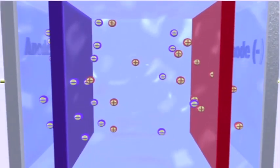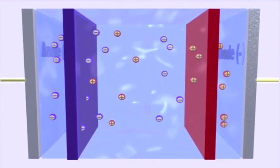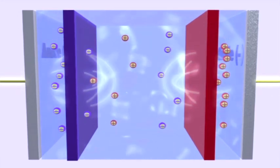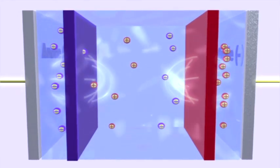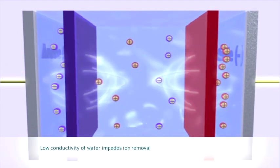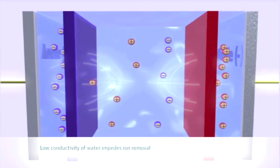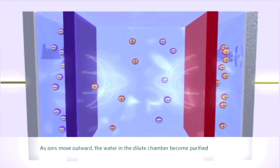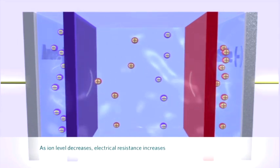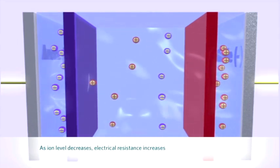This configuration of membranes and electrodes forms the framework of a CEDI module. This process is limited, however, by the slow speed at which ions move through water. In effect, the low conductivity of water impedes ion removal. In other words, as the product compartment water becomes more and more pure, the electrical resistance of this water increases and counters the effect of the electrical field.